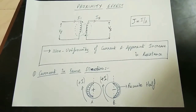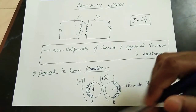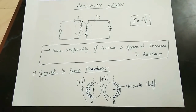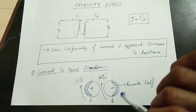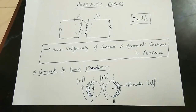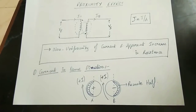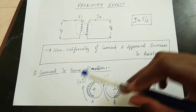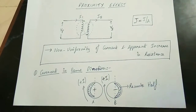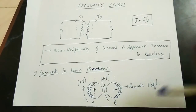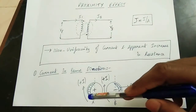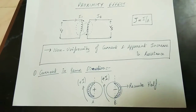We can see conductors A and B. If A has a current flow, we can create an alternating flux. We can see the proximity effect in AC. In DC, the current distribution is uniform, but in AC it is non-uniform. The alternating flux from A will induce a current in conductor B. So in B, a current is induced.